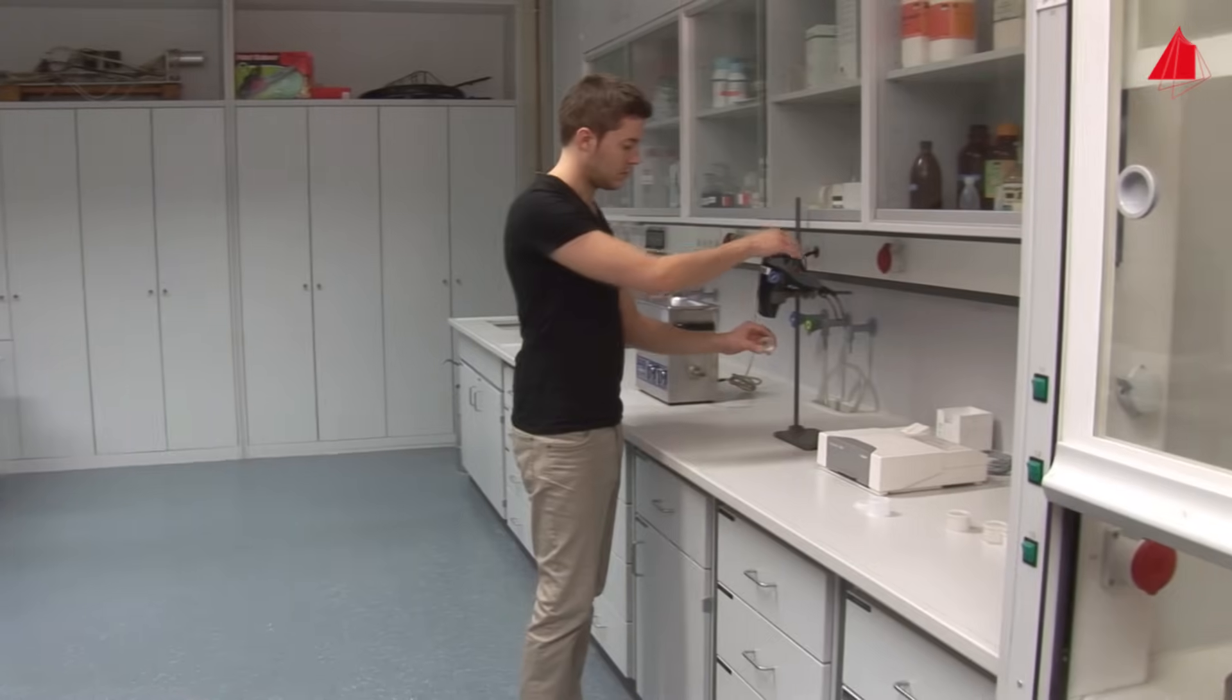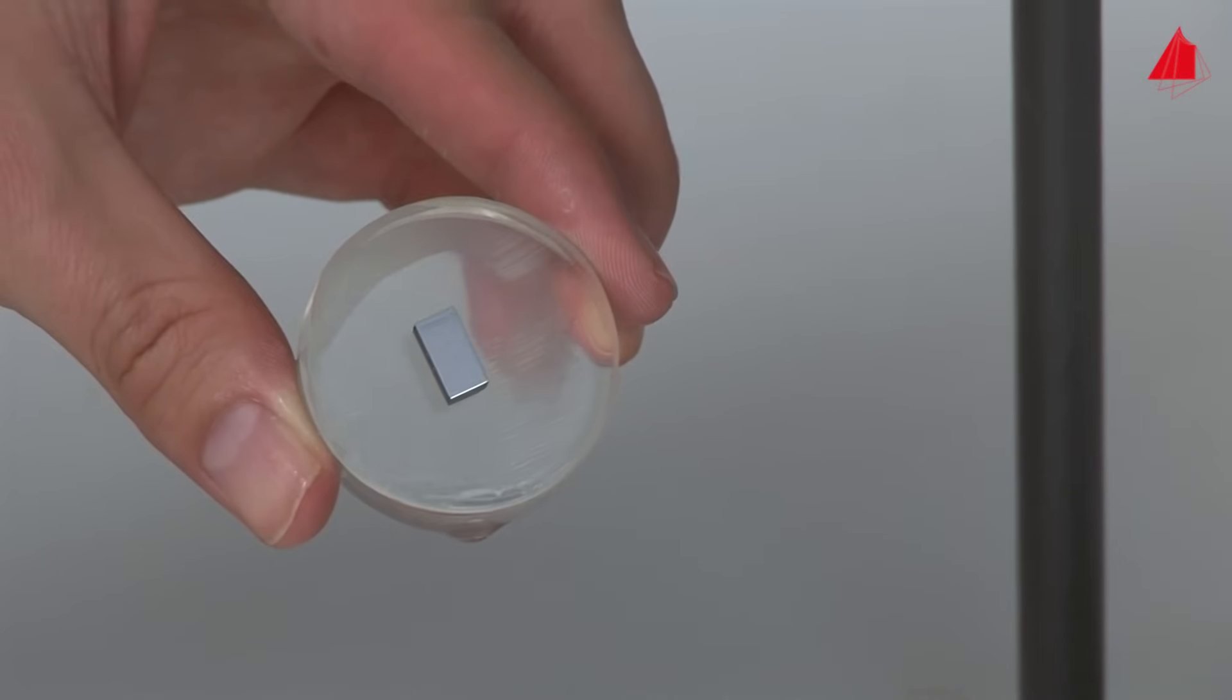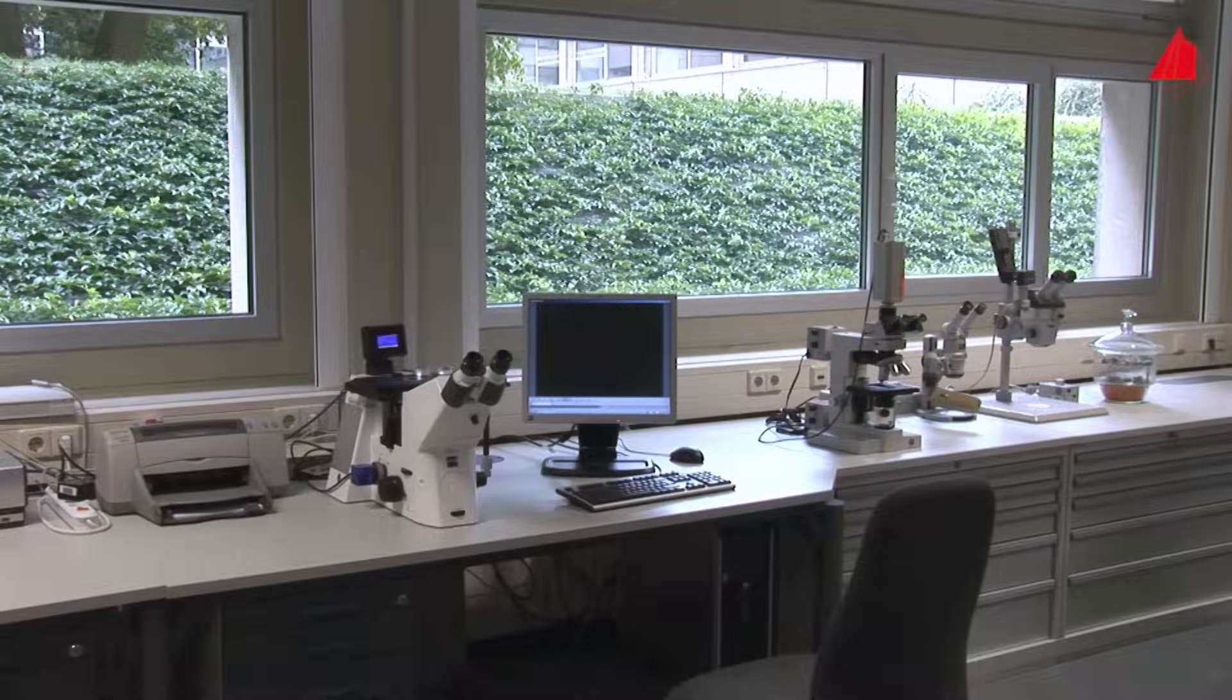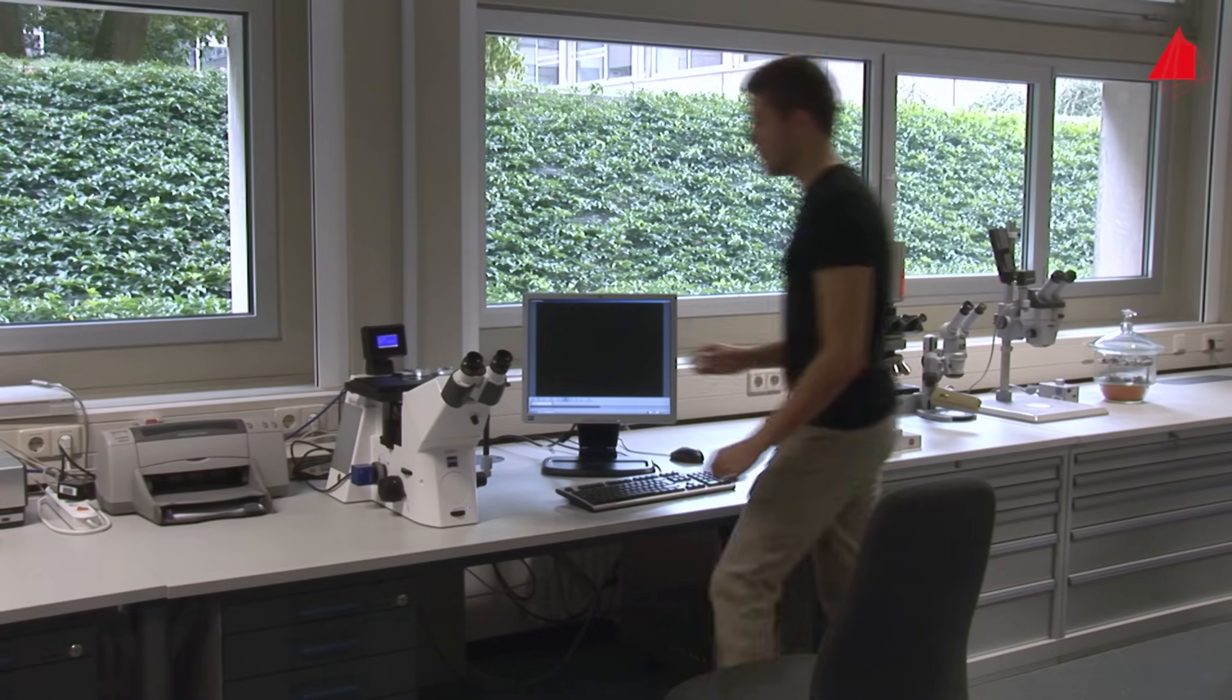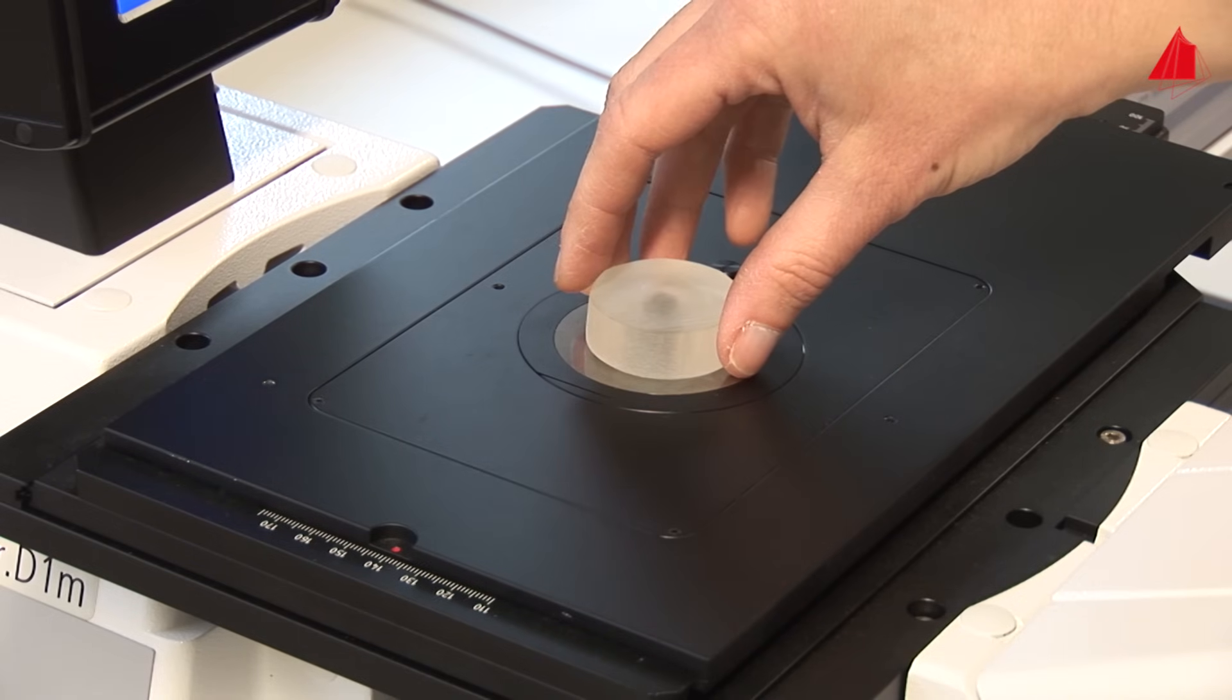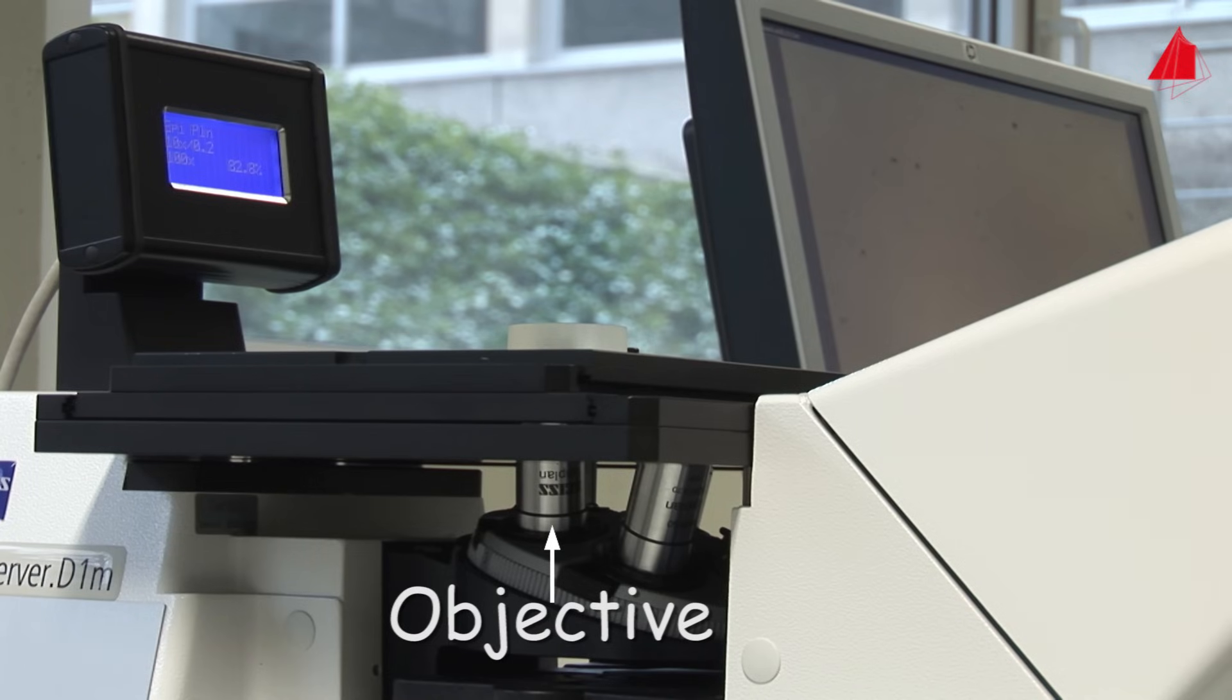From now on, the sample is called a metallographic specimen or micro-section. Judged with the naked eye, our metallographic specimen seems to be well prepared. It is now allowed to go under the microscope for the first time, or rather onto the microscope. In fact, the design of typical metallographic microscopes is inverted. Inverted means upside down. The microscope objective is not facing downwards as usual, but upwards. This offers the advantage of simply placing the metallographic specimen on top of the microscope stage. The prepared surface faces downwards.